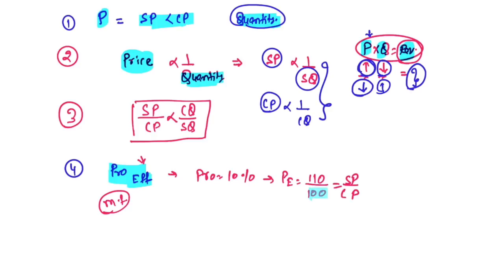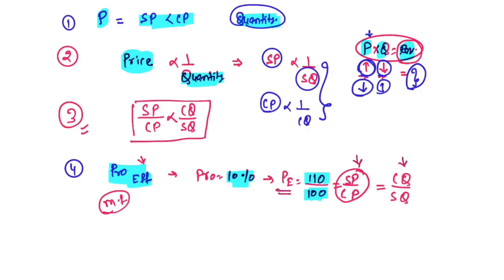If cost price is 100 and profit is 10%, selling price is 110. So the profit effect is the selling price / cost price ratio. From our third concept, this also equals cost quantity / selling quantity. That is our fourth learning: profit effect = SP/CP = CQ/SQ.